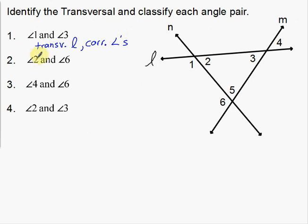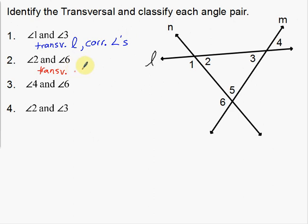Next up is angles two and six. Notice two is right here and six is here. We want to identify the transversal, which is the line that helps to create two and six. Notice N helps to create two and six. So my transversal is line N.